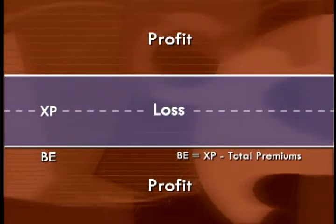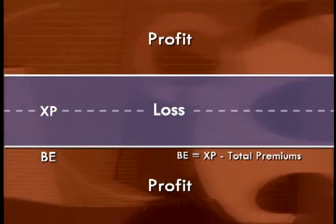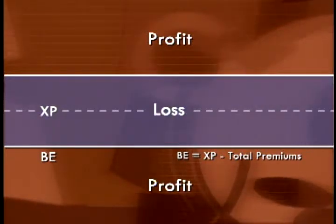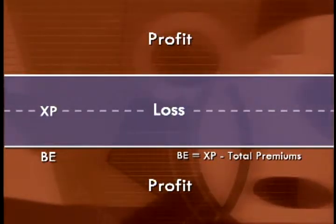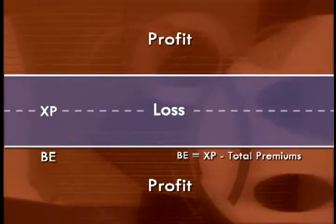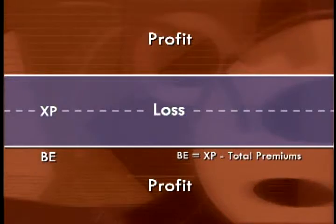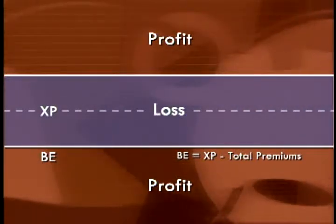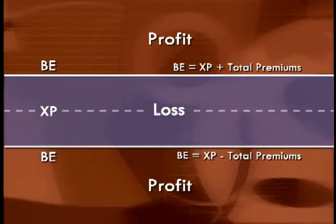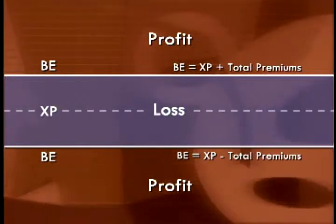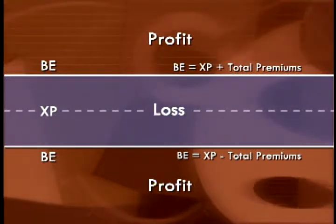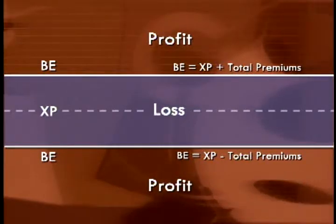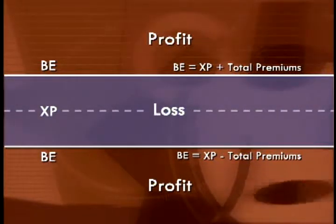Let's summarize what we've discovered about long straddles using this diagram. The strike price is in the center — both the call and the put have the same strike price. There are two break-even points, not one: one is above the strike price by the total amount of the premiums, and the other is below the strike price by the total amount of the premiums. If the stock goes above the higher break-even point or below the lower break-even point, we make money — in either direction.